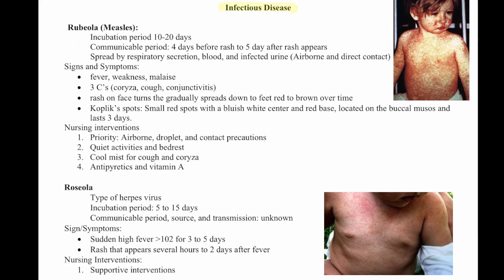The first one is measles. The incubation period is 10 to 20 days. The communicable period is four days before the rash to five days after the rash appears. It is spread by respiratory secretions, blood, and infected urine, so airborne and direct contact precautions.